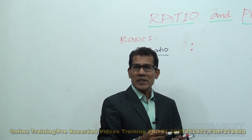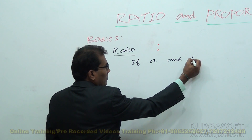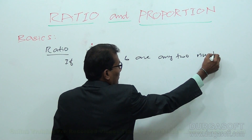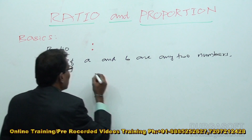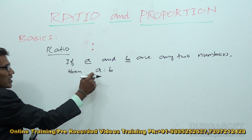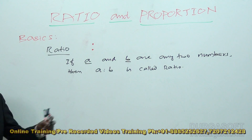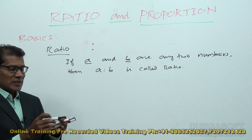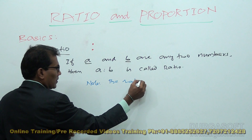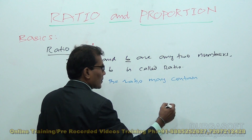What does ratio mean? How do we express a ratio? We can define ratio like this: if A and B are any two numbers, then A is to B is called ratio. It is not compulsory that the ratio contains only two numbers — there may be more than two numbers also.